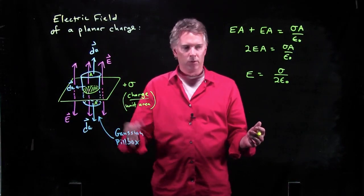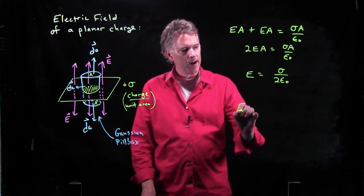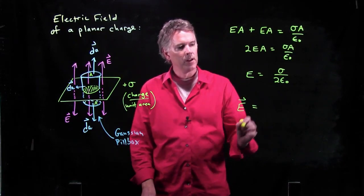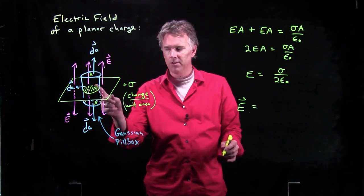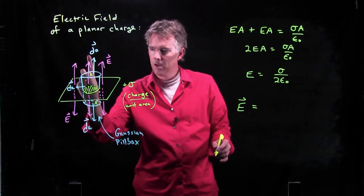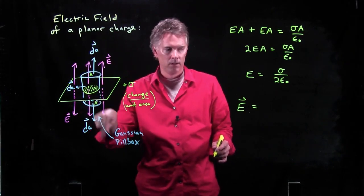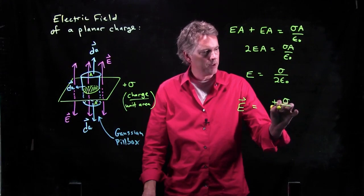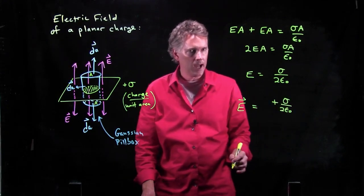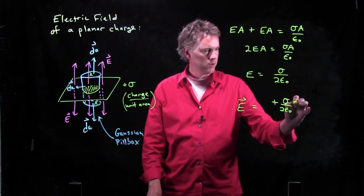Now, electric fields are, of course, vectors. We have to figure out how to put a direction on this. And the way you do it is you go back to the symmetry that we started with in Gauss's law. And you say, alright, the electric field was pointing up or it was pointing down. And so you do this. It's positive sigma over 2 epsilon naught in this z-hat direction.